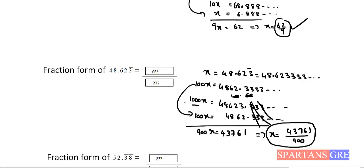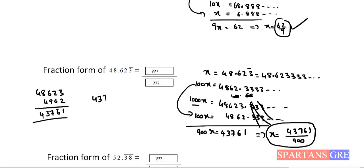Now I will show you how to do this problem using a shortcut in a single line. For 48.623̄, you compute 48623 minus 4862, which gives 43761. Then write 43761/900. That's it — this is the final answer. I will now explain how I am able to write this in a single step.